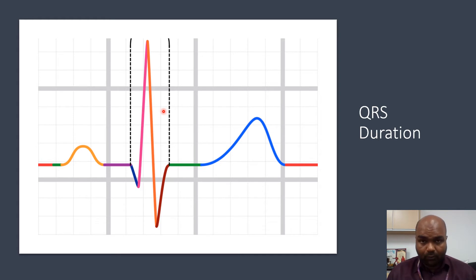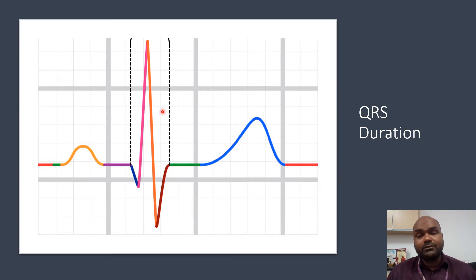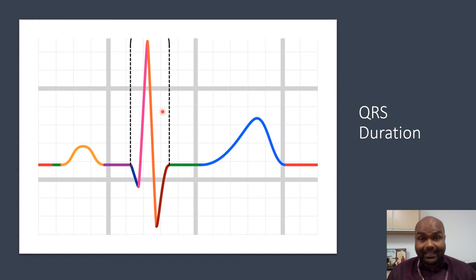If the QRS is prolonged — more than three small boxes — you have to think about the causes of a broad QRS complex. This may be due to bundle branch blocks, changes due to hyperkalemia, or life-threatening arrhythmias such as ventricular tachycardia.